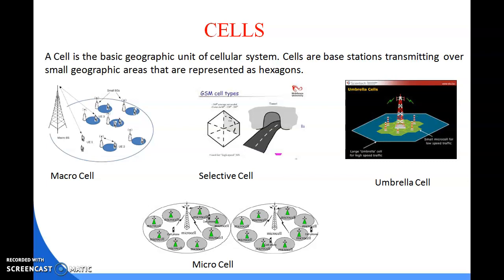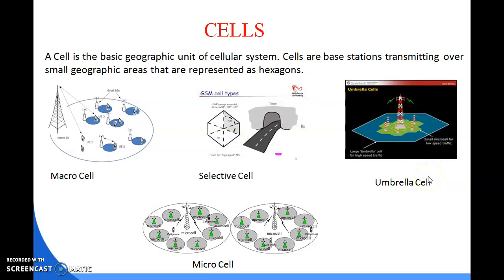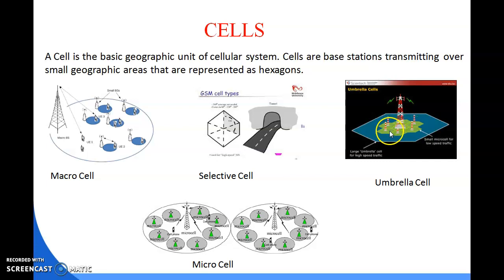The types of cells include: macro cells, which are large cells; selective cells, where in a hexagon only one part or direction is used — for example, inside a tunnel system where the frequency communicates in a selective range; and umbrella cells, which are large cells for high-speed traffic, while small micro cells are used for low-speed traffic.